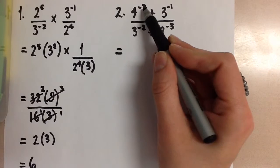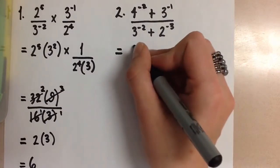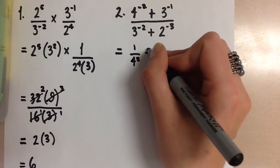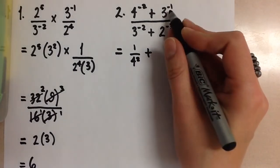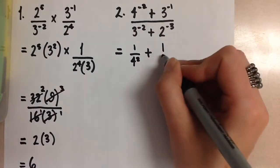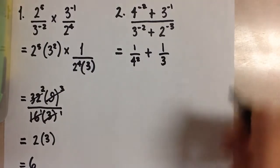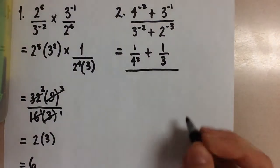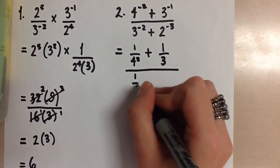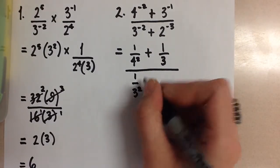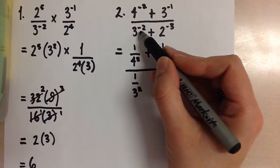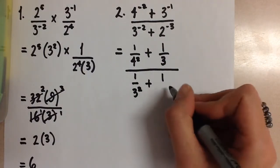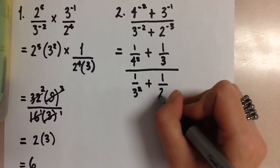So to get rid of the negative 2 in the exponent here I'm going to have 1 over 4 squared plus and then the negative 1 in the exponent turns this into a 1 over 3. This is all going to be over 1 over 3 squared because I got rid of the negative 2 in the exponent plus 1 over 2 to the 3.